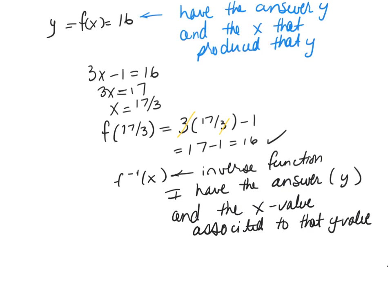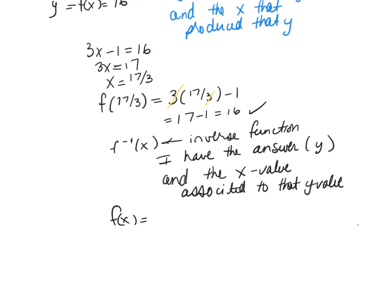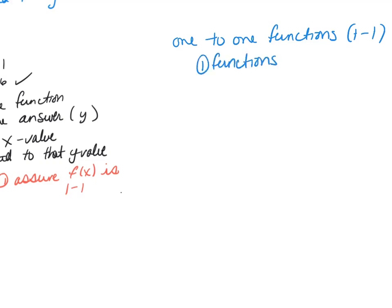We write the inverse function by taking the function we have and solving for x. Going back to our equation, f of x is equal to 3x minus 1. Before finding the inverse, the first thing I need to do is assure it's one-to-one. So that's the notation for one-to-one — I need to assure my original function is one-to-one. Let me explain what one-to-one means.